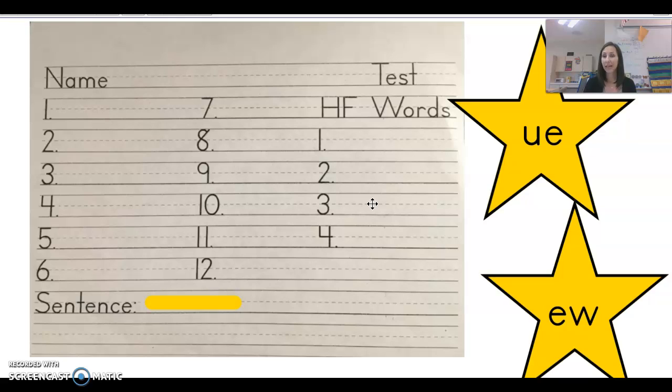The sentence again. He drew a blue clue. He drew a blue clue. He drew a blue clue.